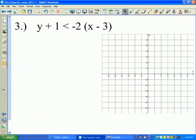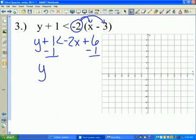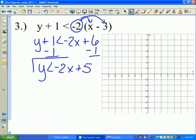And lastly, y plus 1 is less than negative 2 times x minus 3. So first things first, we got to distribute the negative 2 to everything inside the parentheses. So then we have negative 2x plus 6, because it's a negative 2 times a negative 3. Everything else is coming on down. So we want to subtract 1 on both sides. Now we have y is less than negative 2x plus 5. Is this in my slope-intercept form? Yes, it is.